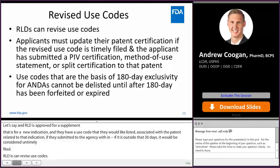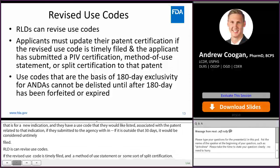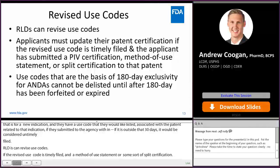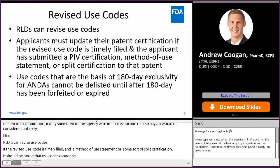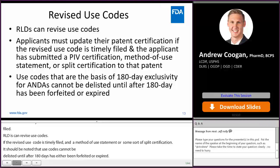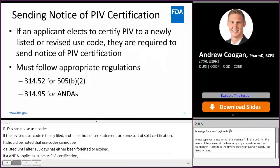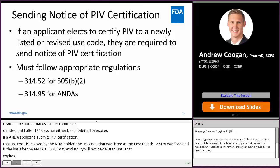It should be noted that use codes that are the basis for 180-day exclusivity for ANDA applicants cannot be delisted until after 180 days has either been forfeited or expired. So if an ANDA applicant submits a paragraph 4 certification to a patent with one use code and that use code is revised by the NDA holder, the use code that was listed at the time the ANDA was filed and is the basis for 180-day exclusivity will not be removed from the Orange Book until after 180 days has been forfeited or expired. Similar to new patents, applicants are required to send notice of paragraph 4 certification for both newly listed and revised use codes, per 314.52 for 505 applications and 314.95 for ANDA applications.